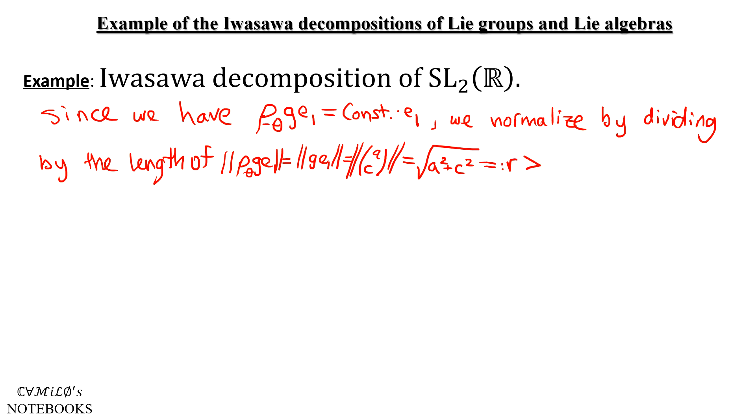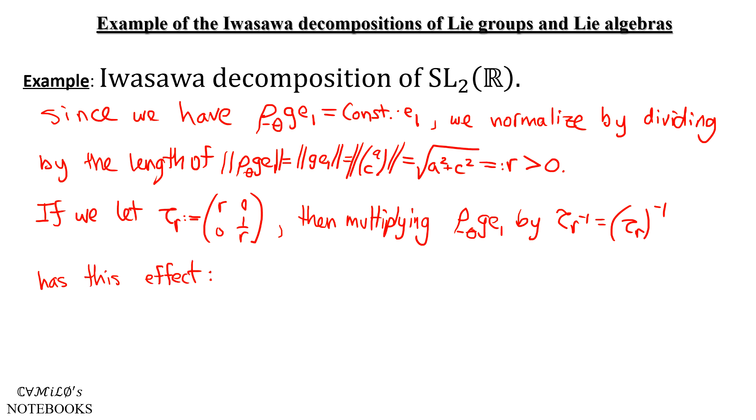So now let τ_R be this matrix again. And if we multiply ρ_{-θ} times G times E₁ by τ_R inverse, it'll have the effect that we want, which is to scale it down to get E₁, the original standard basis element.